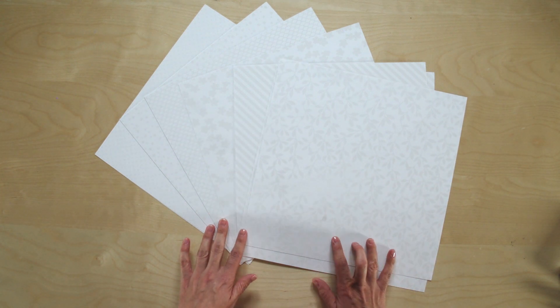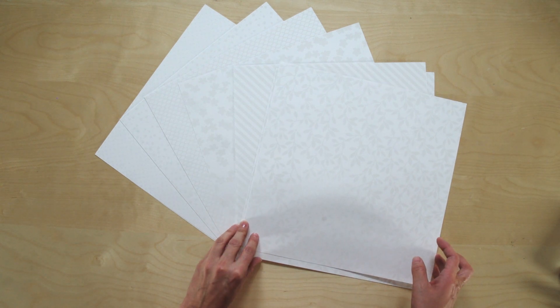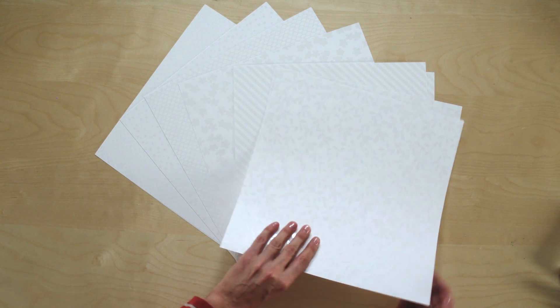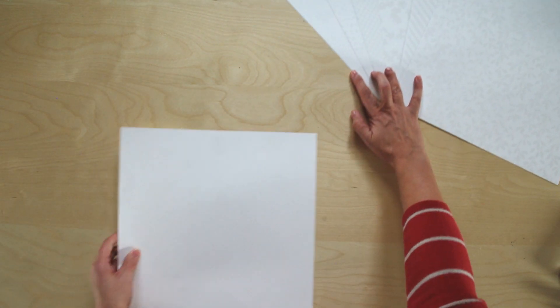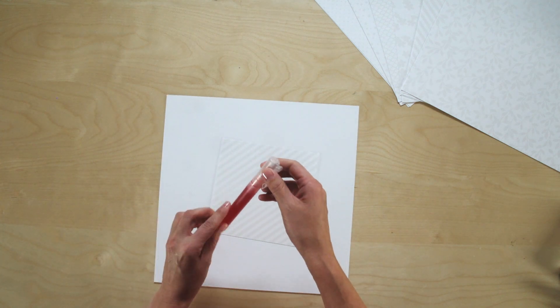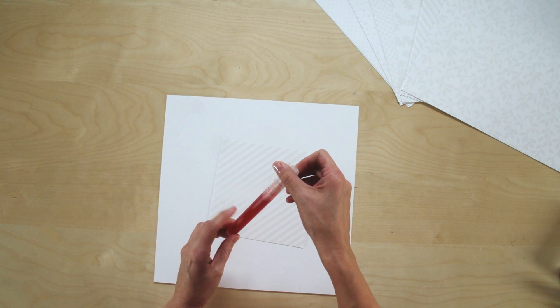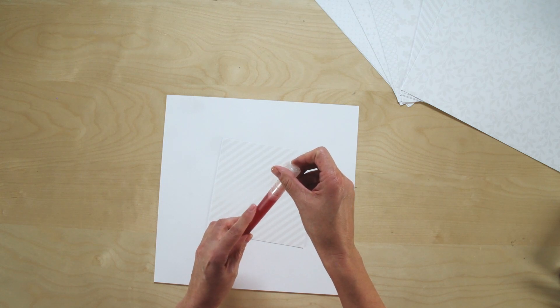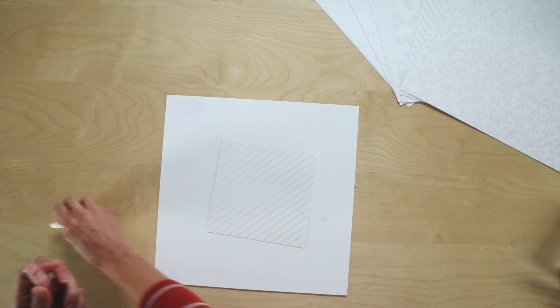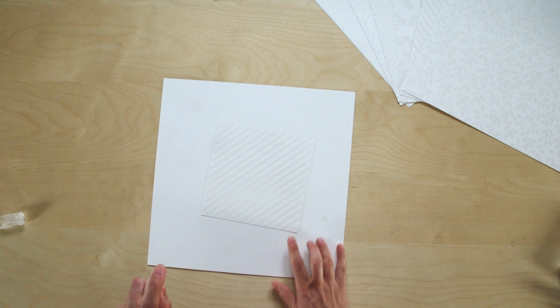There are so many different techniques you can do with this paper, and I'm going to highlight just a few of those today. One of my favorites, and we're going to start with, is spritzing. To spritz with this paper, you just need to get a Stampin' Spritzer and fill it with rubbing alcohol and a couple drops of the ink of your choice. This one is Strawberry Slush, and then just spritz directly on the paper.